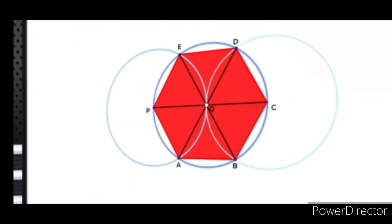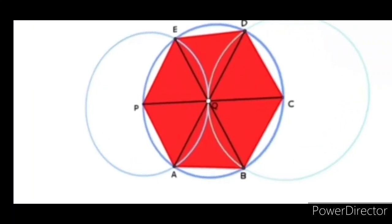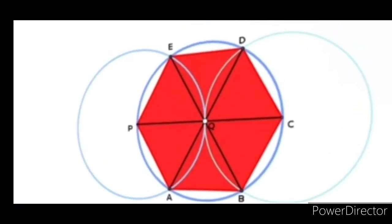Looking at this figure with points B, E, A, and D, we will form small triangles: PQE, EQD, DQC, CQB, and AQB.